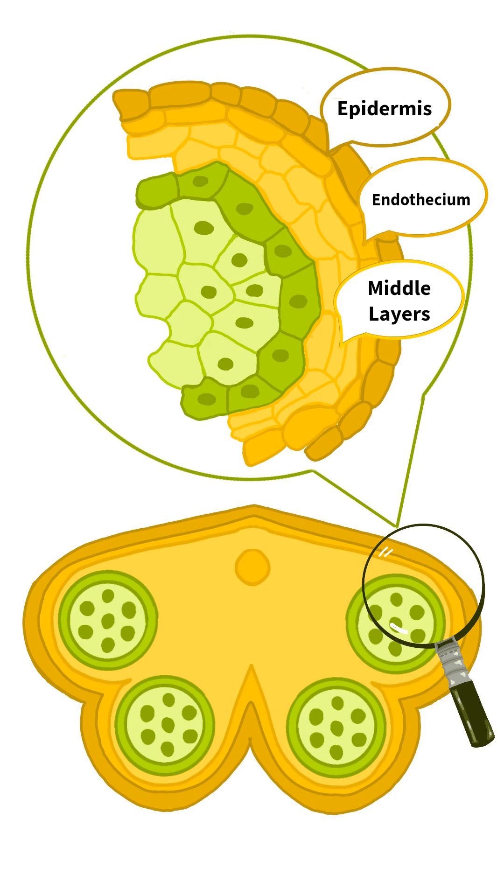The primary role of these three layers—epidermis, endothecium, and middle layers—is to protect the developing pollen and assist in dehiscence, the opening of the anther, allowing pollen to be released when ready.